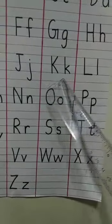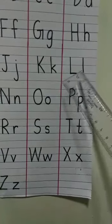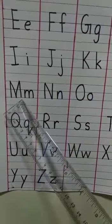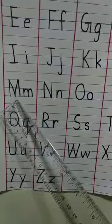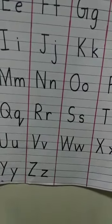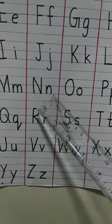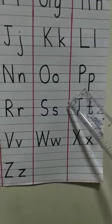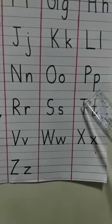K for kite, capital K, small k. L for lion, capital L, small l. M for monkey, capital M, small m. N for nest, capital N, small n. O for orange, capital O, small o. P for parrot, capital P, small letter p.